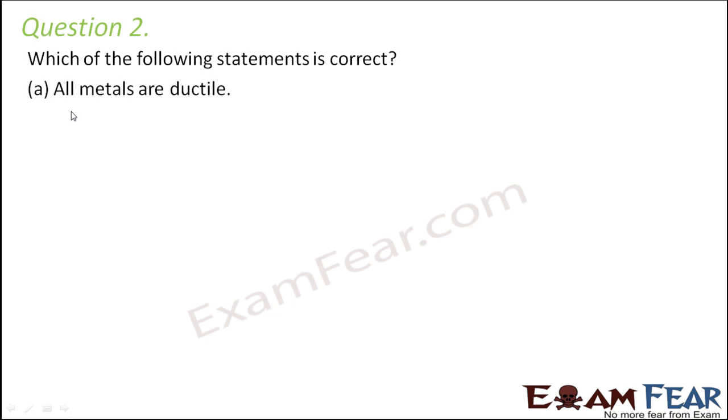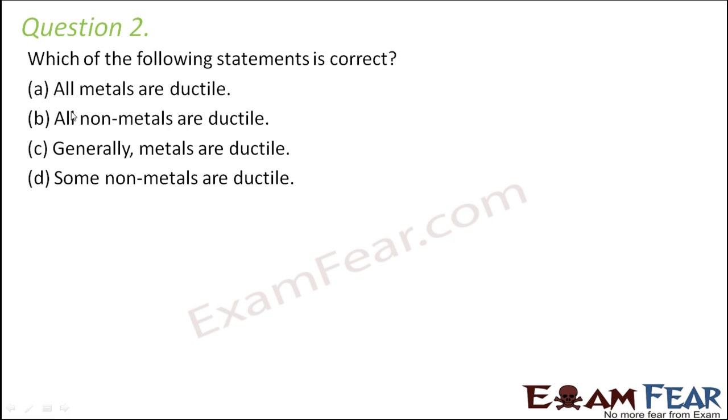So let us look at question number 2. Which of the following statements is correct? All metals are ductile, all non-metals are ductile, generally metals are ductile, some non-metals are ductile. So ductility is the property by which objects can be drawn into thin wires. Now non-metals can never be ductile.